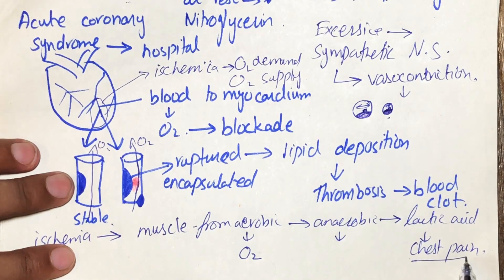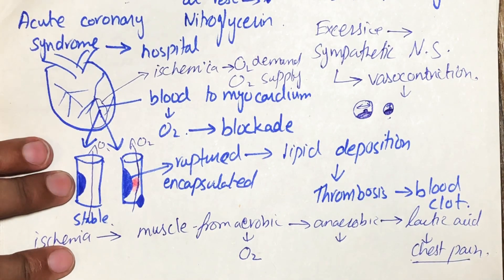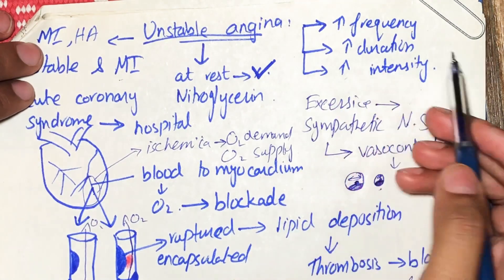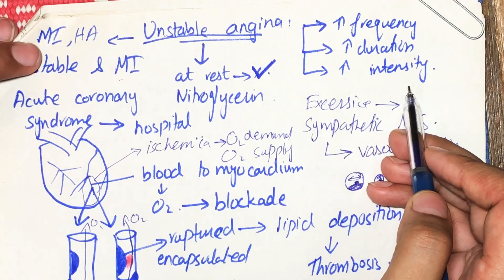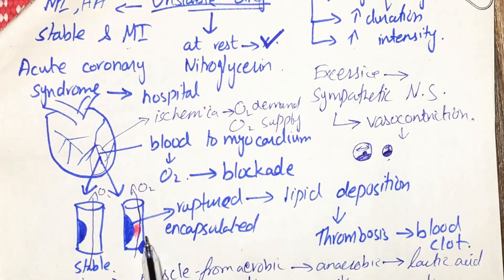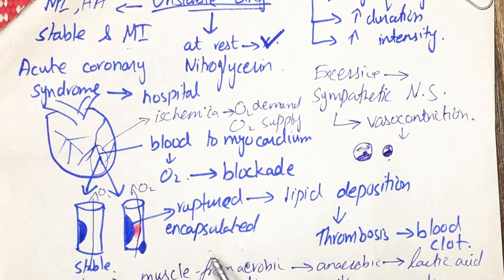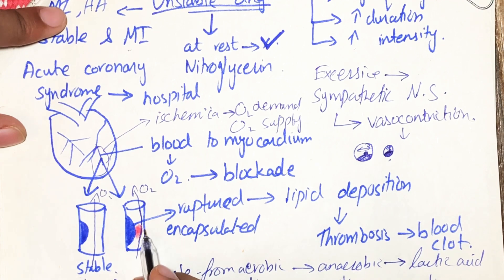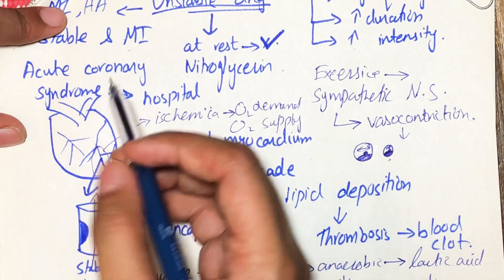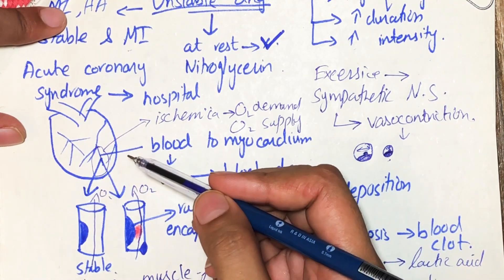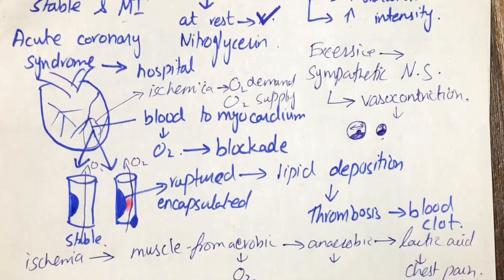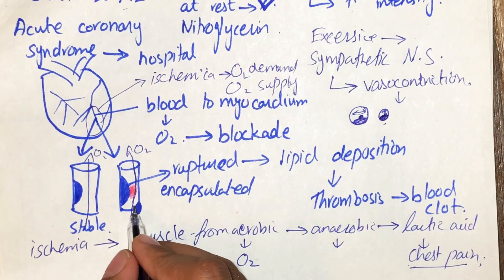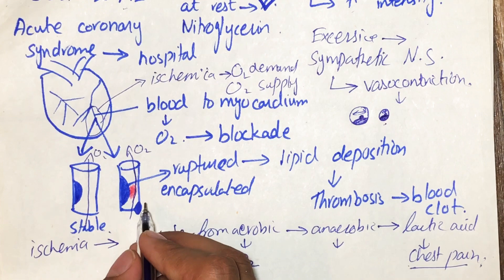This lactic acid leads to chest pain, which is the primary characteristic of angina — both stable and unstable. In unstable angina, there is more blockade of vessels, so there is greater increase in frequency, duration, and intensity of pain. In myocardial infarction, by contrast, there is complete blockage with no oxygen supply, causing death of the myocardium that cannot be recovered. The blood clot in unstable angina can also dislodge and travel to a different site, potentially causing a heart attack.